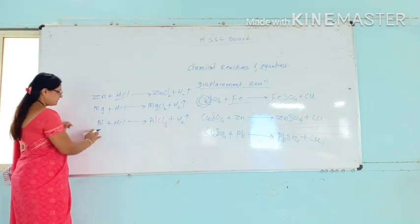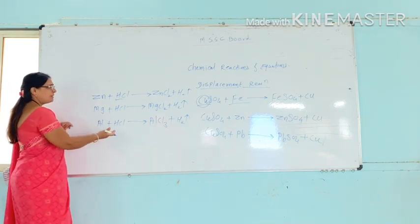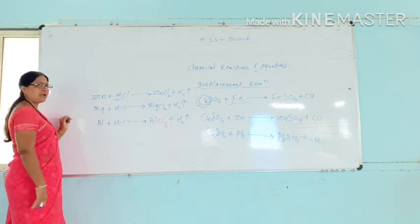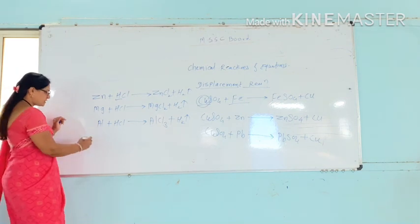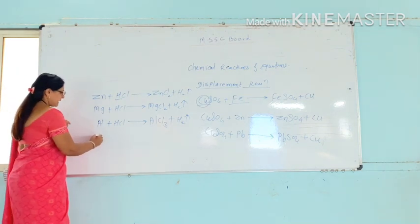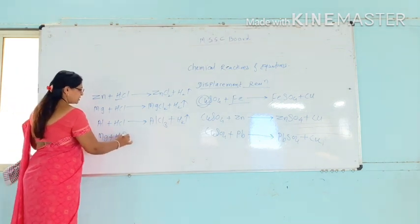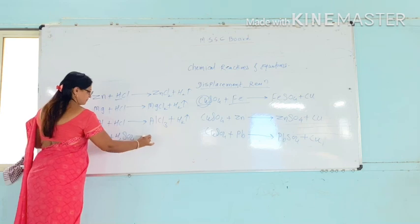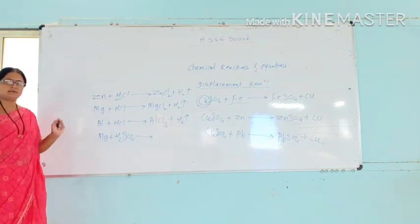In displacement reactions, you can use hydrochloric acid or sulfuric acid. For example, magnesium reacts with sulfuric acid — you can see that this reaction will also be a displacement reaction.